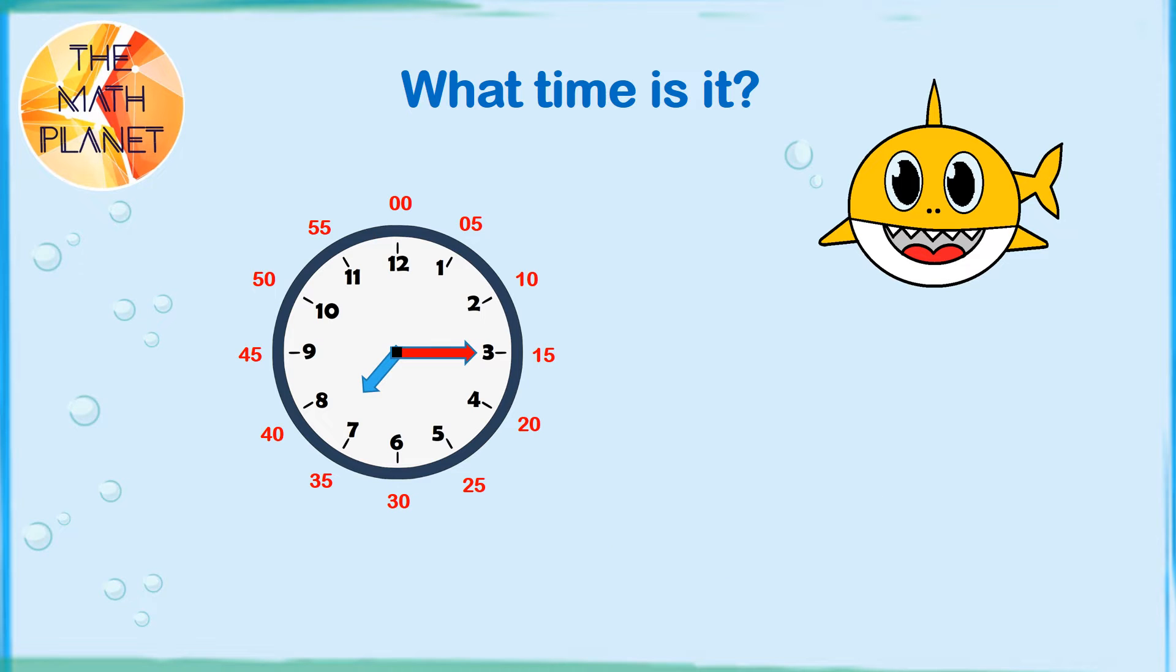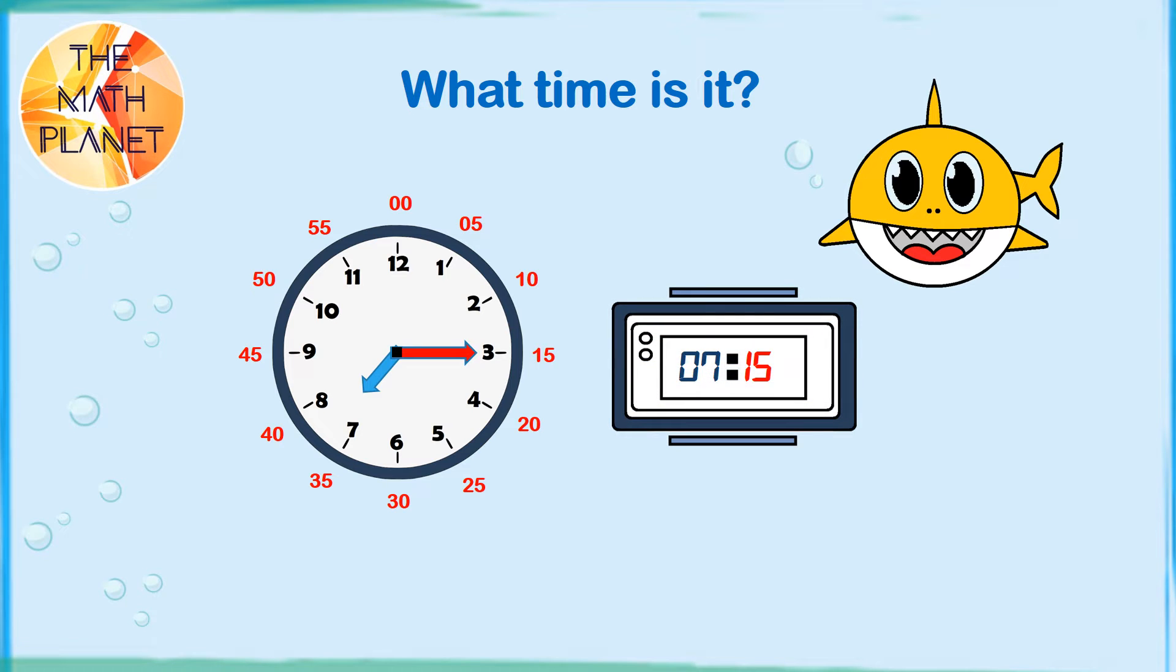What time is it? The hour's hand points to 7 while the minute's hand points to 3. So, it's 7.15. Let's criss-cross and say it in words. It's 15 minutes after 7. Another way to say it is, it's quarter past 7. So, when telling time, 15 minutes is equal to quarter of an hour.